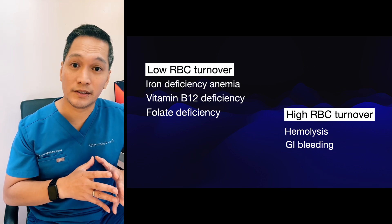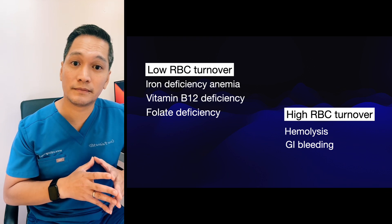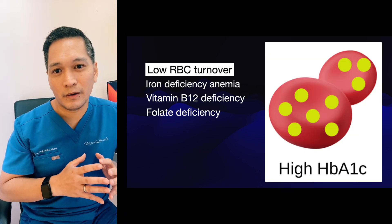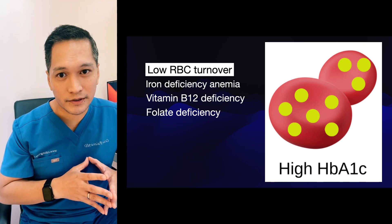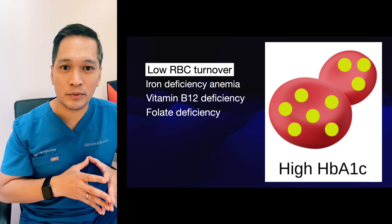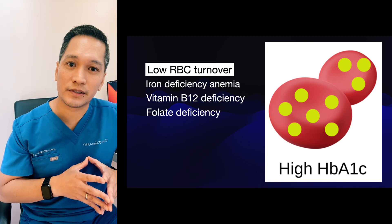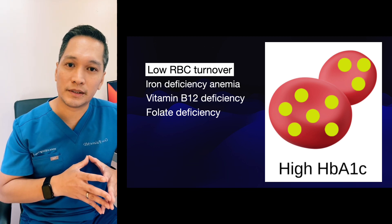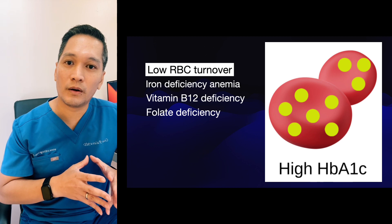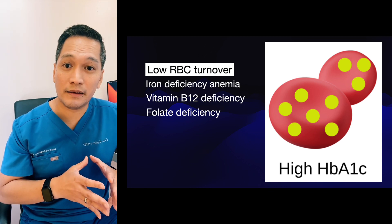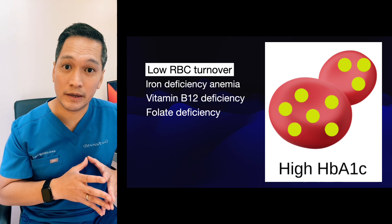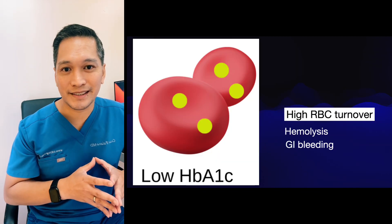This is called A1c discrepancy. In conditions with low RBC turnover, such as iron deficiency anemia, vitamin B12 deficiency, and folate deficiency, there will be less erythropoiesis, leading to more old glycated RBCs, causing a falsely elevated hemoglobin A1c.